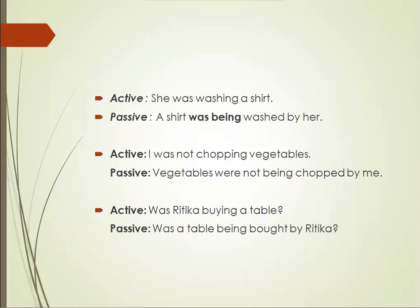Negative: 'I was not chopping vegetables.' So 'vegetables' is the object. We use 'were' because 'vegetables' is plural: 'Vegetables were not being chopped by me.' Interrogative: 'Was Ritika buying a table?' As Ritika is singular and 'a table' is also singular, we use 'was': 'Was a table being bought by Ritika?'